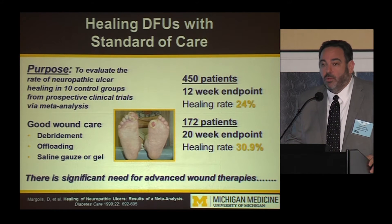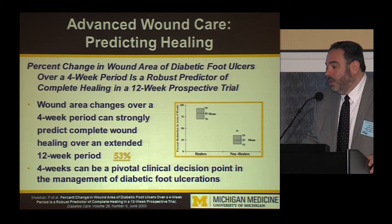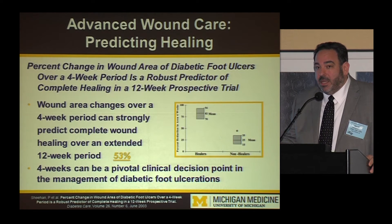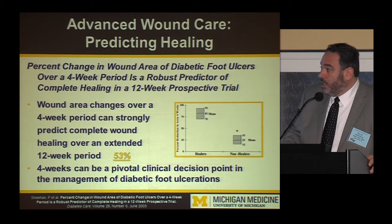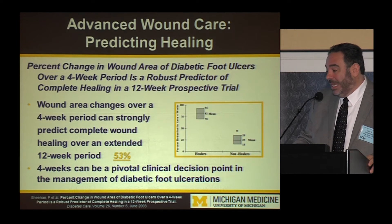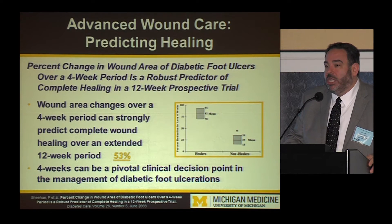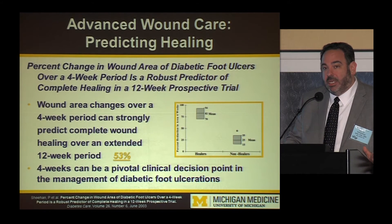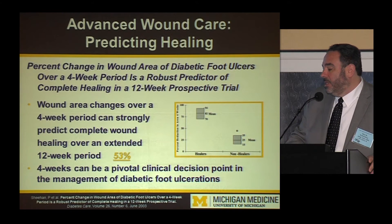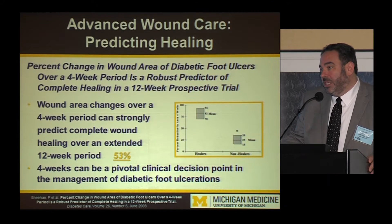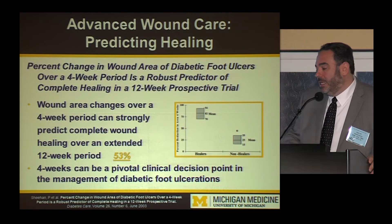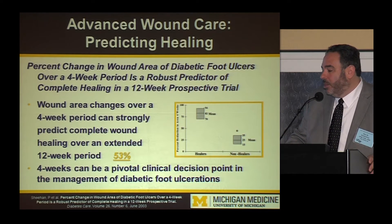Several trials went out to a five-month endpoint, and the healing rate went up only about six or seven percent. With standard of care, many of these wounds will not heal, and there is likely a significant role for advanced wound healing in this patient population. We look to another landmark article — Peter Sheehan's data — which found that wound area change over a four-week period strongly predicts healing. About 53% healing rate at four weeks would predict healing at 12 weeks, and that four-week benchmark is why many advanced wound modalities are covered by payers.